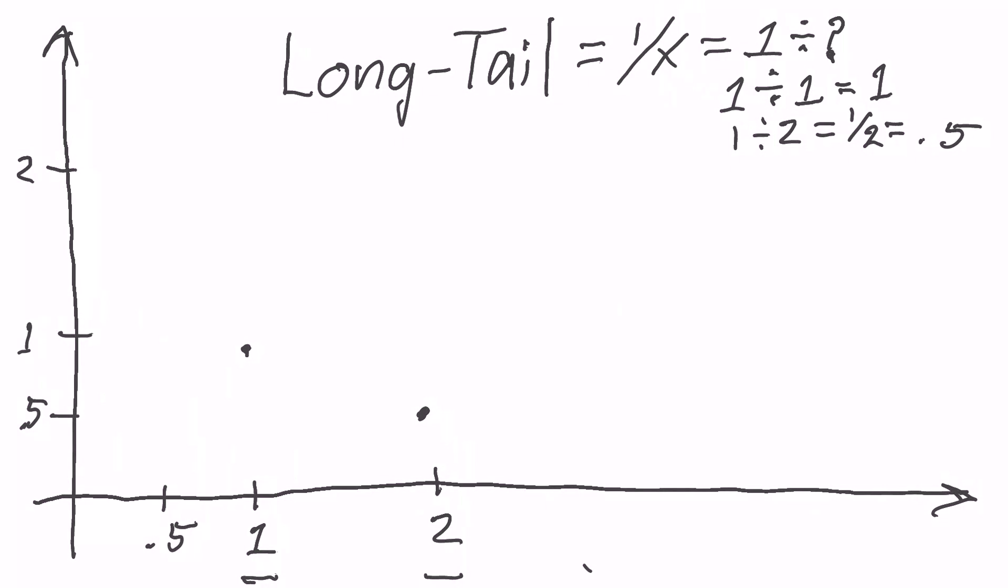Now, let's put in 0.5. 1 divided by 0.5 equals... What do you think that equals? Well, that equals 2. So that dot gets put right about here. So already when you draw that, you're starting to see the shape that's often thought of as the long tail. And let's put some higher numbers in there.